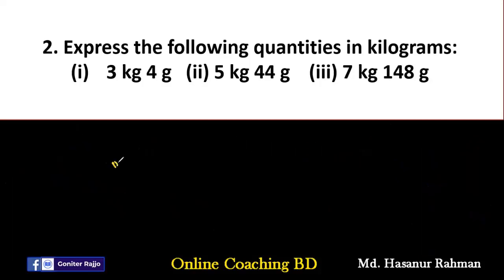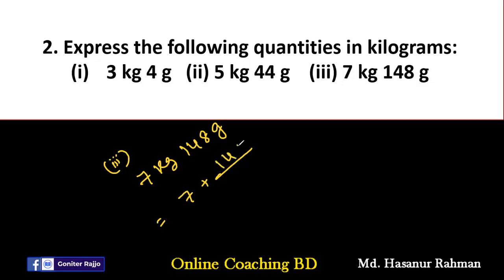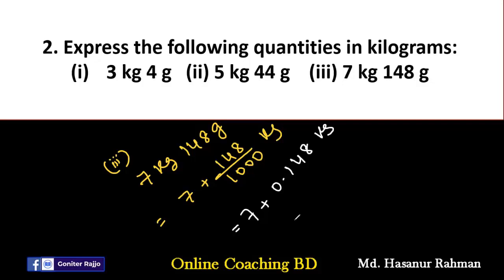Number three: seven kilograms, one hundred forty-eight grams. Since one kilogram equals one thousand grams, we divide one hundred forty-eight by one thousand to get 0.148. The final answer is seven plus 0.148, which equals 7.148 kilograms.